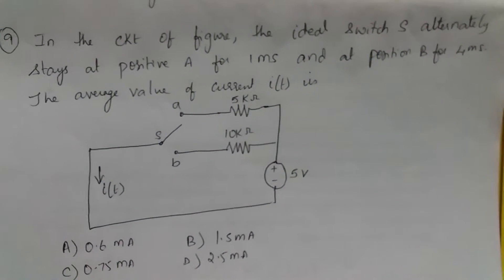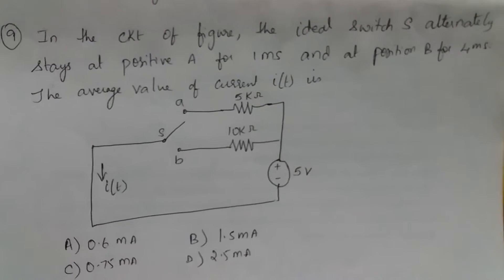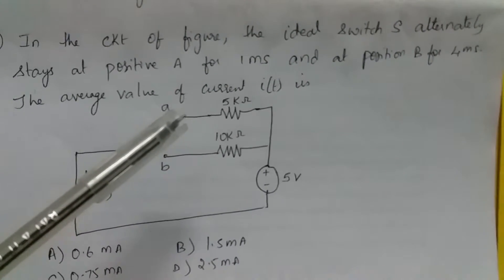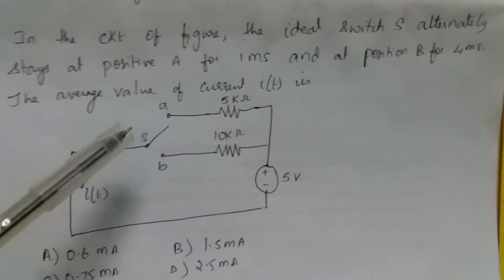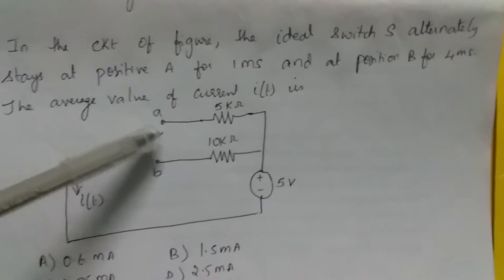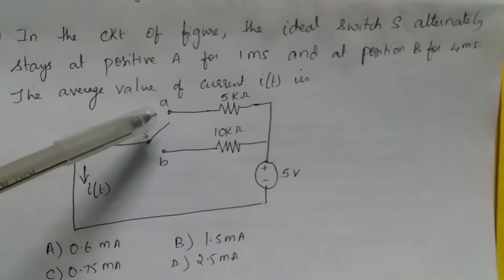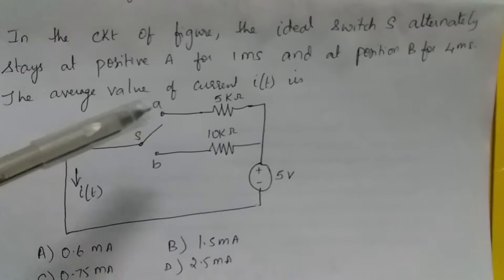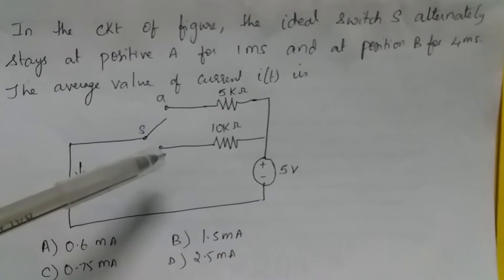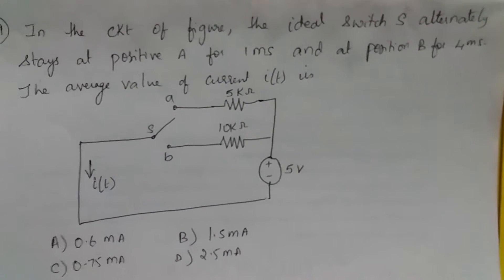Now in the circuit of figure, the ideal switch alternately stays at position A for 1 millisecond and at position B for 4 milliseconds. The average value of current I is: When the switch is in position A, the current is I equals 5 by 5K, that is 1 milliamp. When it is at position B, the current is 5 by 10K, that is 0.5 milliamps for 4 milliseconds.